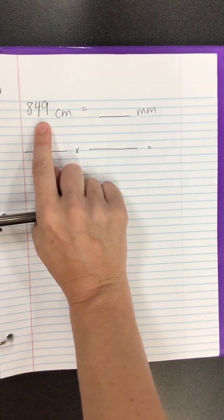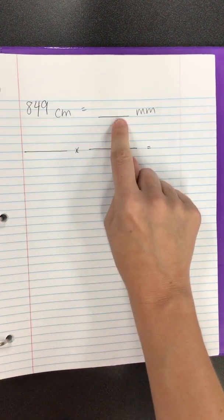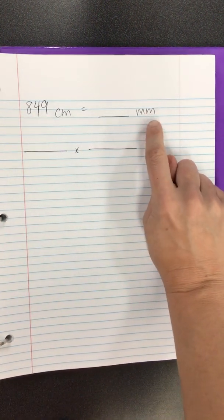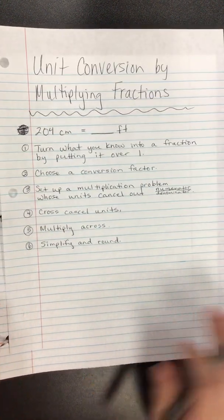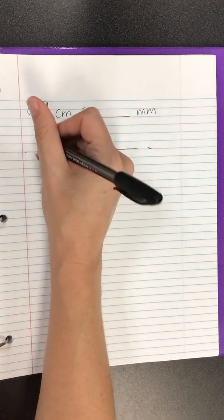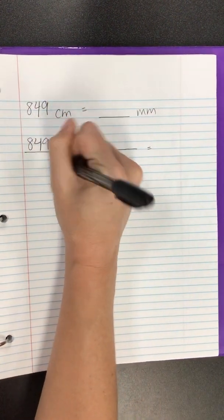Alright, final practice question. In this case, we have 849 centimeters. So 849 little thumb lengths equals how many millimeters? Millimeters are much smaller than centimeters so things are going to look a little different. Step 1, take what we know. Turn it into a fraction. 849 centimeters over 1.